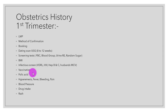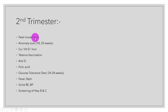We will ask about vaccination — like tetanus — whether she is already taking folic acid, hyperemesis, whether she felt fever, had any bleeding or pain during the first trimester, whether her blood pressure was normal, raised, or decreased, what other drugs she took during the first trimester, and lastly whether she had any rash. In the second trimester, we ask about fetal movements, the anomaly scan around 18–20 weeks, calcium, vitamin D and iron supplements, tetanus vaccination status, NTD folic acid, glucose tolerance test, fever, rash, urinary status, blood pressure, and hepatitis B and C screening.